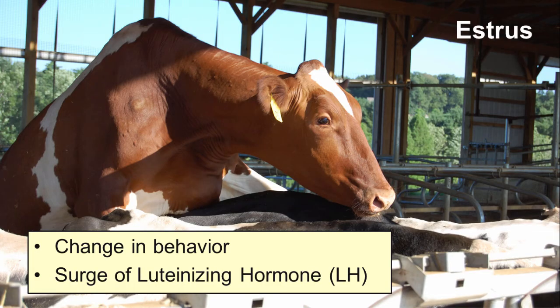High estrogen from a preovulatory follicle causes significant changes in cow behavior. It is usually quite obvious when she becomes restless and allows other animals, regardless of gender, to mount her. Around this same time, estrogen also triggers a surge of luteinizing hormone to be released from the pituitary gland, which has direct impact on the preovulatory follicle and initiates events that lead toward ovulation.